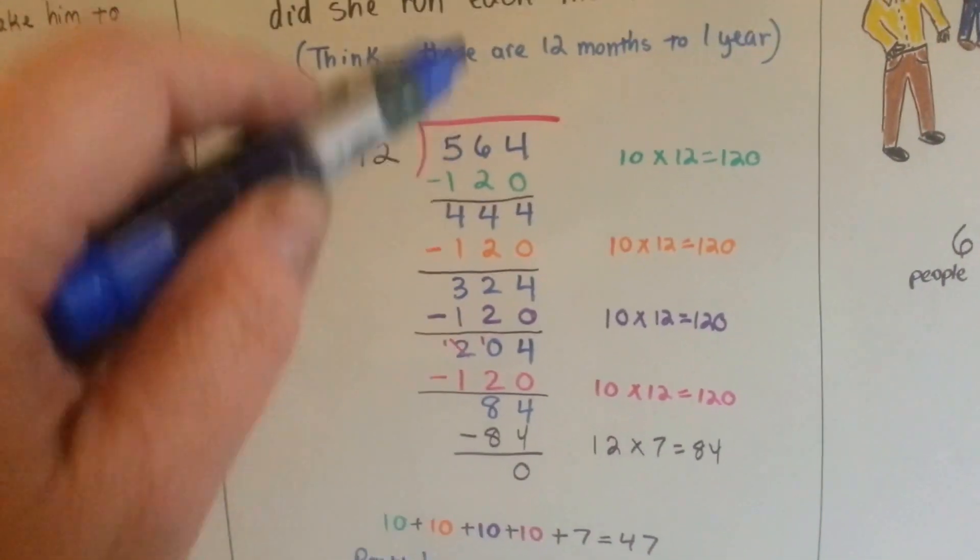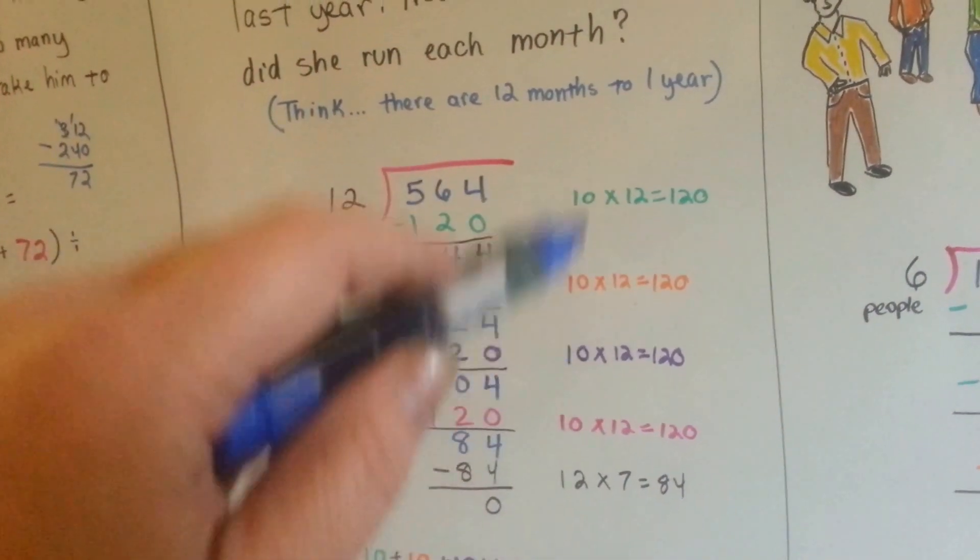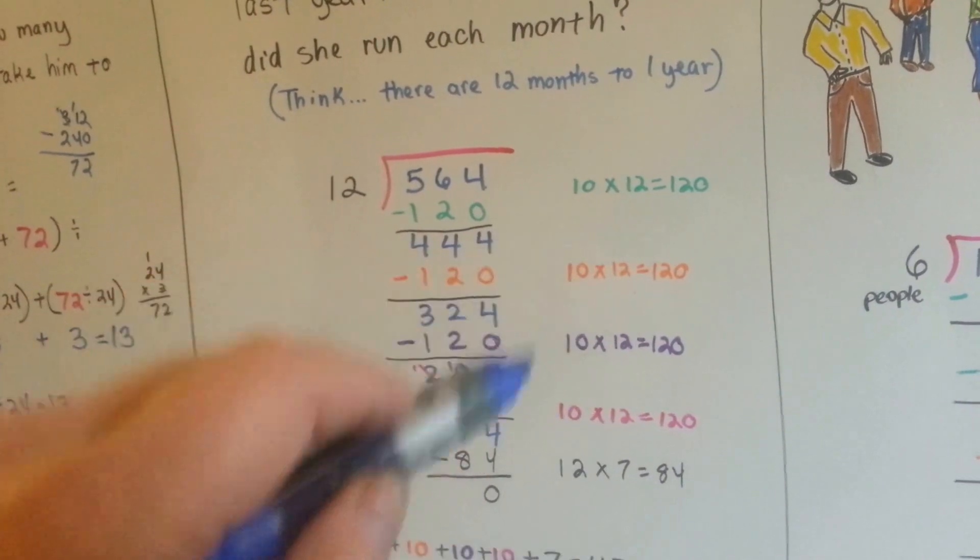That's repeated subtraction. Just doing subtraction of ones you know, like times 10.